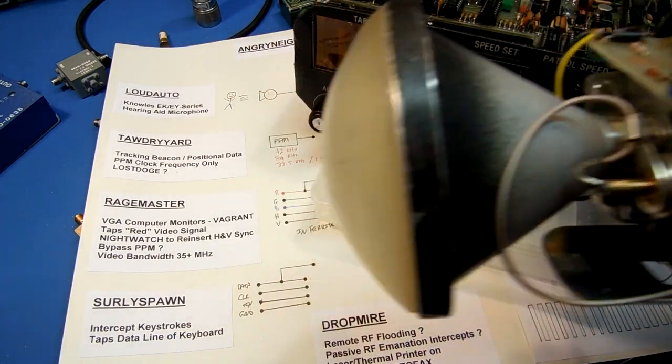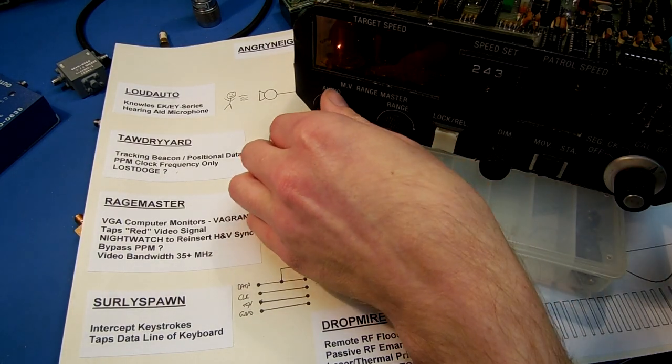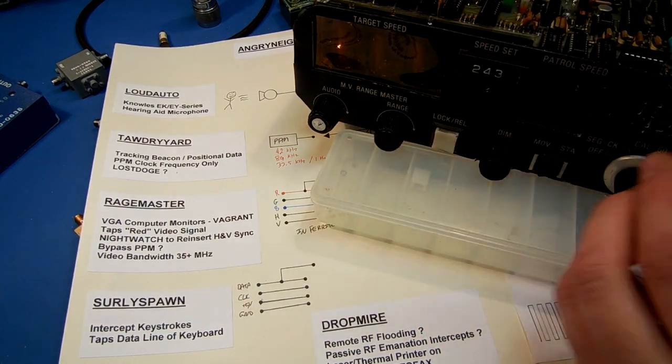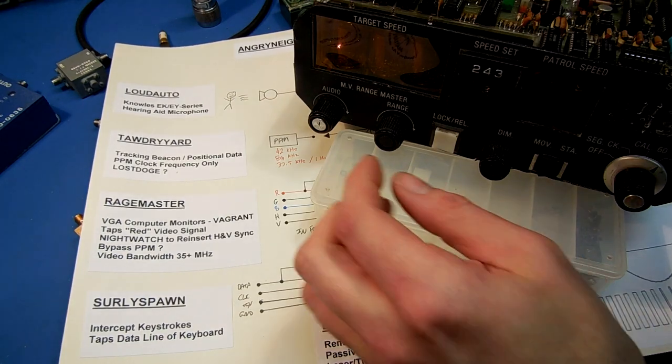This is the 10 gigahertz oscillator. This is your received mixer. I'm pointing the horn antenna, which is this, at the unit itself.